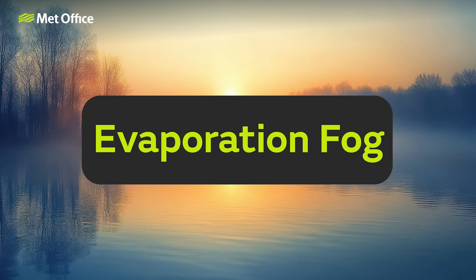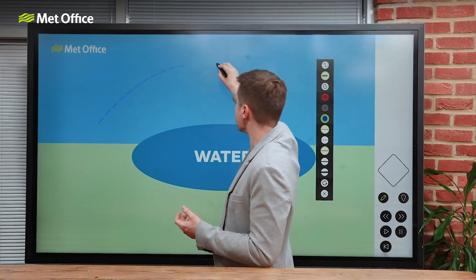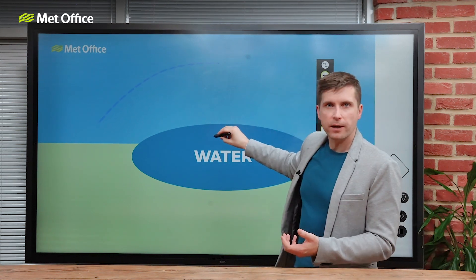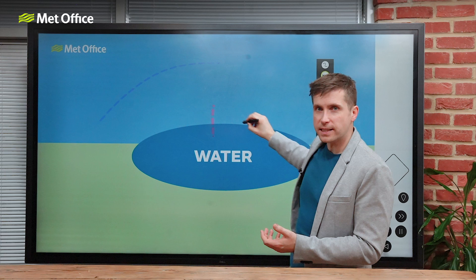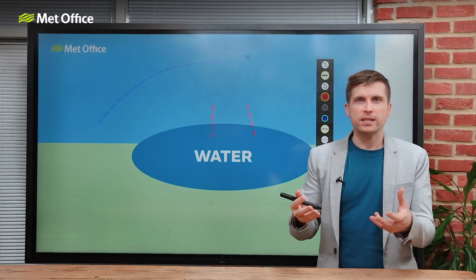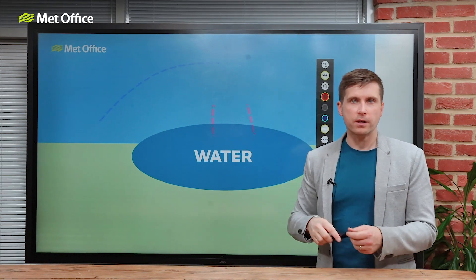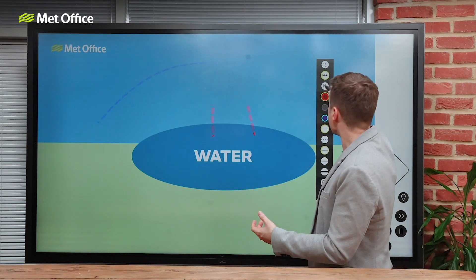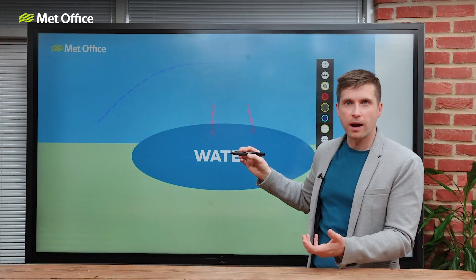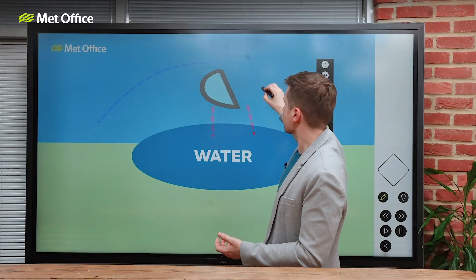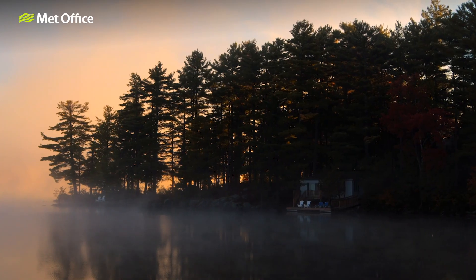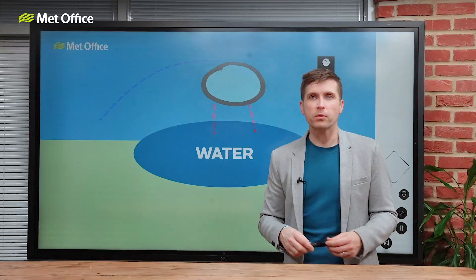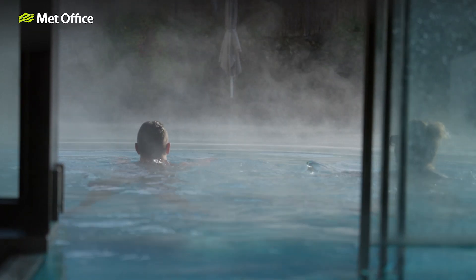Evaporation fog. This is caused by cold air passing over some warm water or moist land. When some of the relatively warm water evaporates into the lower layers, it warms the air, causing it to rise and mix with the cooler air that's passed over the surface. The warm, moist air cools as it mixes with this colder air, allowing for condensation to occur and then the fog to form. Evaporation fog can be one of the most localised forms of fog — it can happen when cold air moves over a heated swimming pool or even a hot tub, where steam fog easily forms.